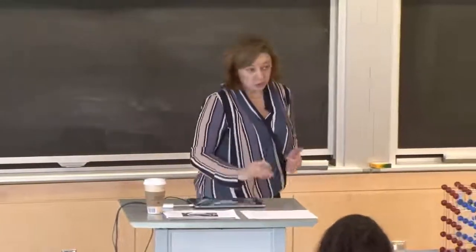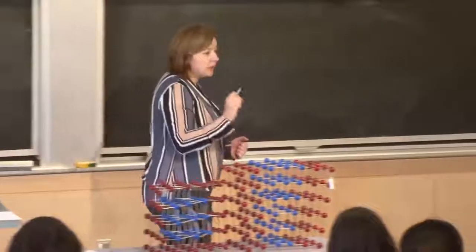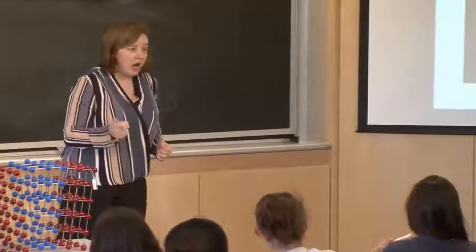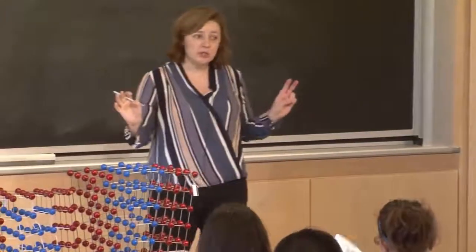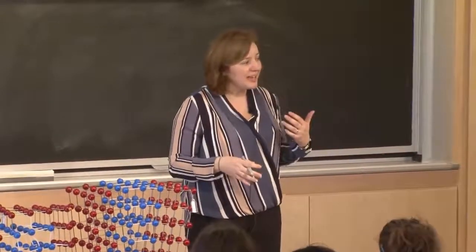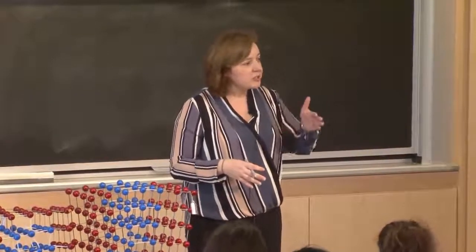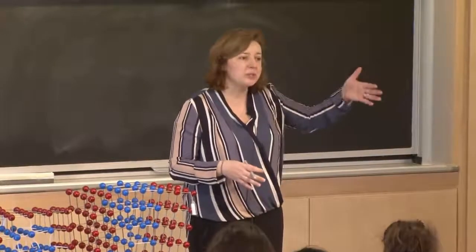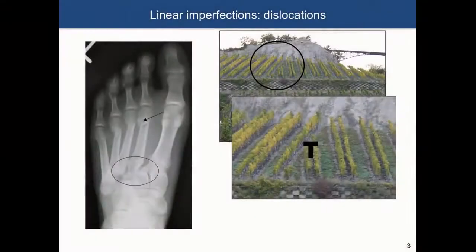Before we start talking specifically about dislocations in materials, the word dislocation is also used in other areas of life. It usually indicates a disturbance of periodicity or the regular structure. For example, you know about dislocations in the body — if you move a joint from its equilibrium position, that is called a dislocation.